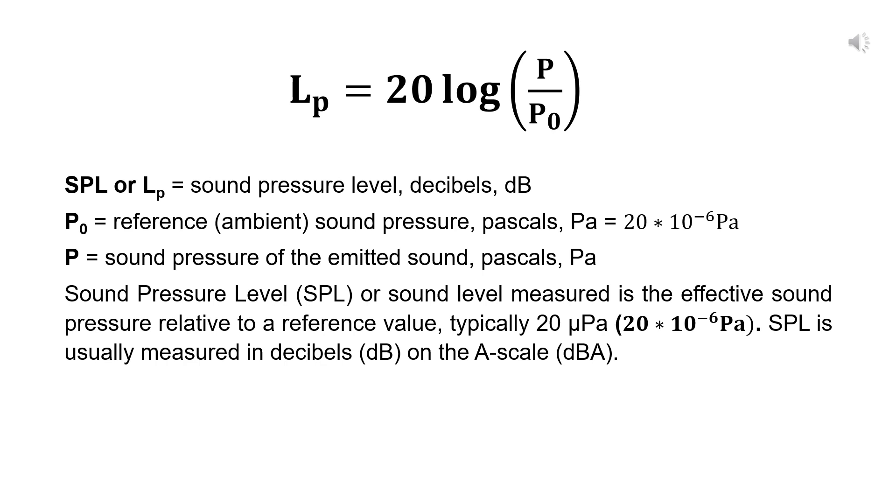In this first equation, we calculate the sound pressure level in decibels. The commonly used reference or ambient sound pressure, P₀, is 20 micropascals. And P is the sound pressure of the emitted sound in pascals. The sound pressure level, or sound level measured, is the effective sound pressure relative to the reference value, which is typically 20 micropascals. The sound pressure level is usually measured in decibels on the A scale.